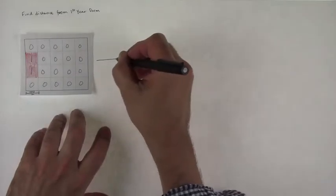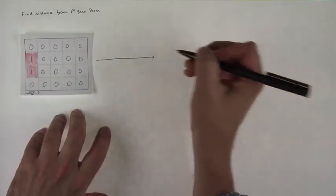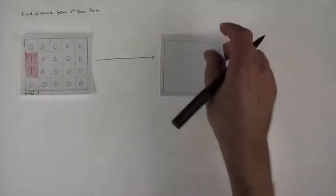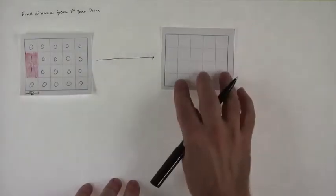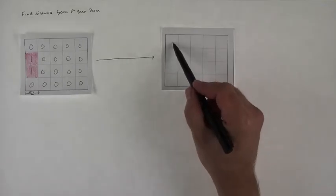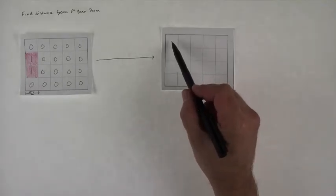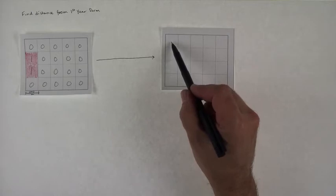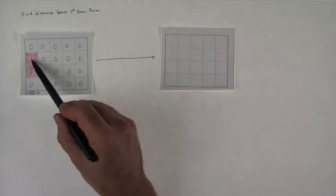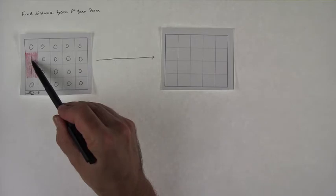And what we'd like to do is use a tool that's going to take this as an input and give us a new output where each cell here would have a value that represents the distance from this location to the nearest cell in this layer that represents the dorm.